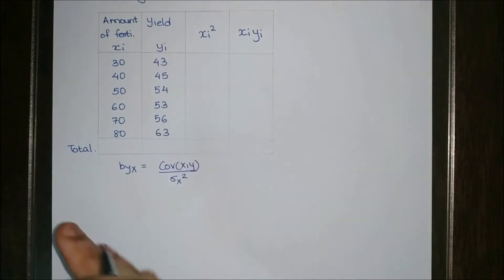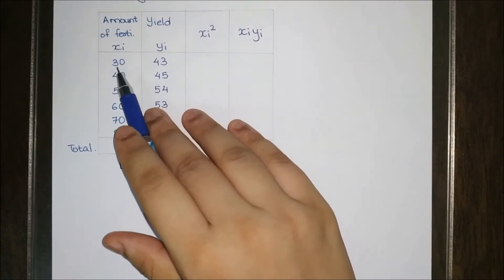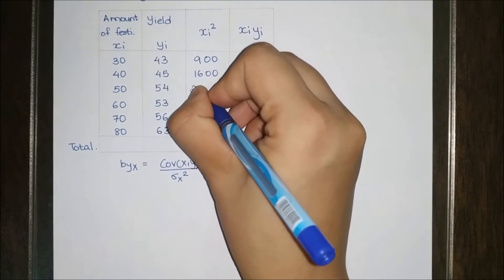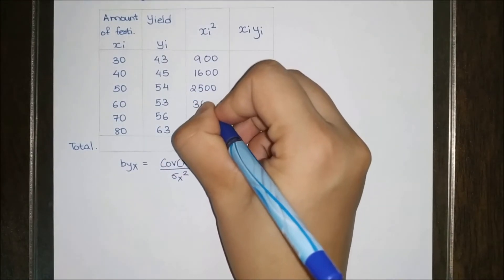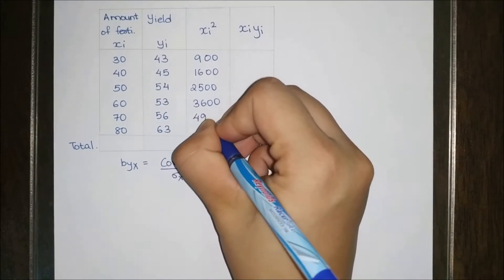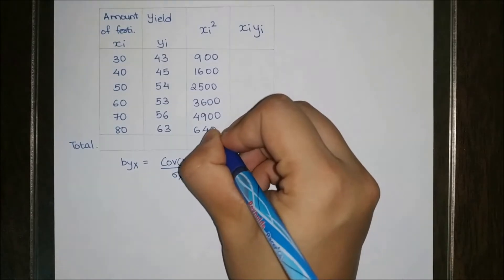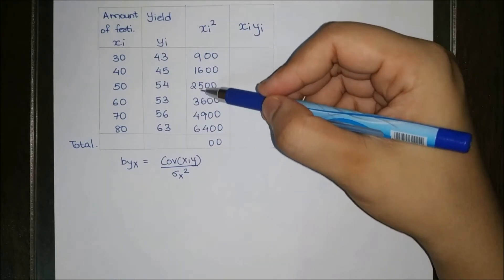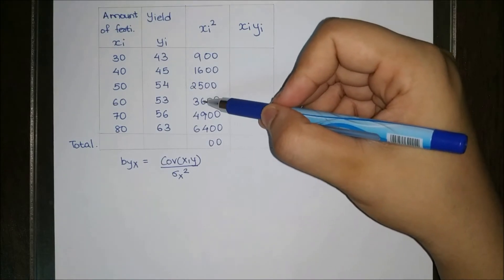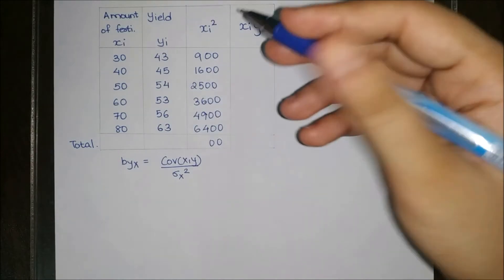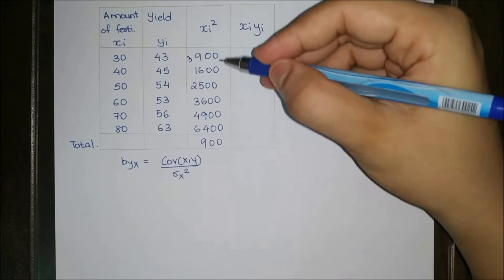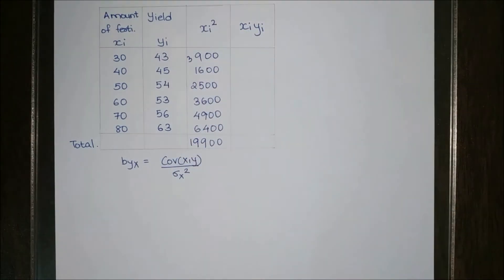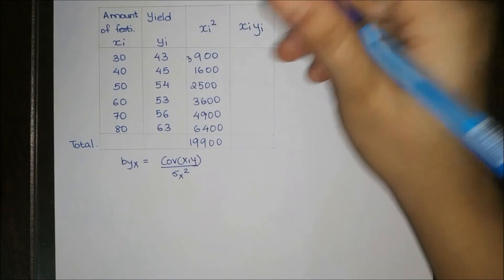Let us find xi². The x values are 30, 40, 50, 60, 70, 80. Squaring each: 30² = 900, 40² = 1600, 50² = 2500, 60² = 3600, 70² = 4900, 80² = 6400. Adding these up: 900+1600+2500+3600+4900+6400 = 19,900. Next we need xi·yi, so we multiply each x with its corresponding y value.